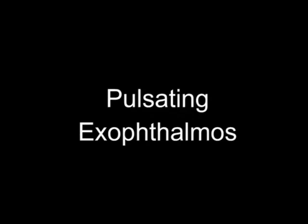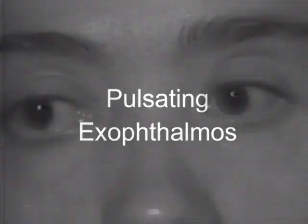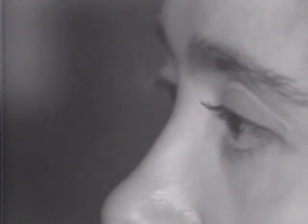Here's an interesting example. This is a patient with neurofibromatosis who has an absent sphenoid wing. Watch the left eye — it's hard to see here, but that left eye is pulsating back and forth, synchronous with the pulse. This is because the pulsations occurring centrally are not blocked by the bone between the brain subarachnoid spaces and the orbit.